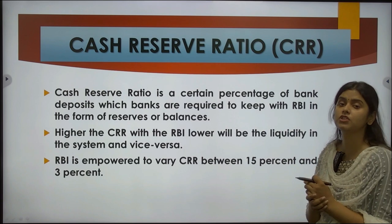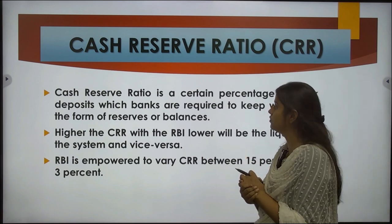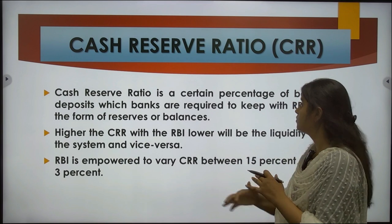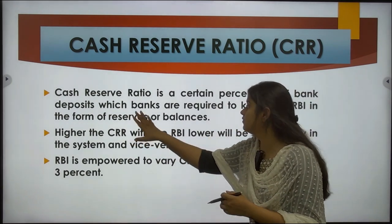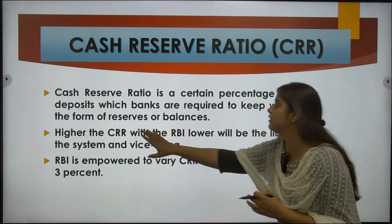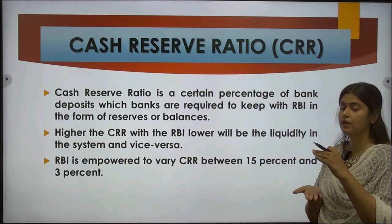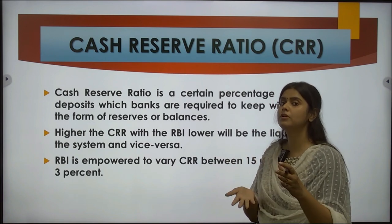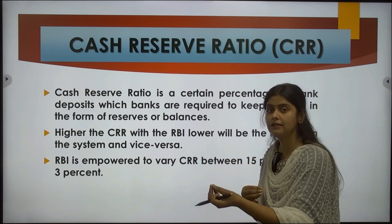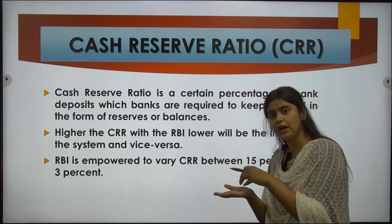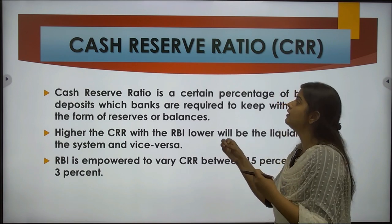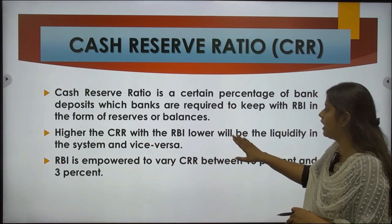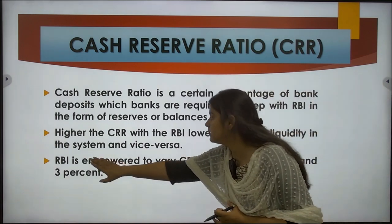Next is cash reserve ratio. CRR is a certain percentage of commercial bank deposits that has to be kept with the RBI in the form of reserves or balances. The higher the CRR ratio, the more amount commercial banks have to give to the RBI, and the less they have available to provide as loans to the public. So the purchasing power of the public is reduced. In order to control inflation, the CRR is also increased. The higher the CRR, the lower the liquidity in the system, and vice versa.